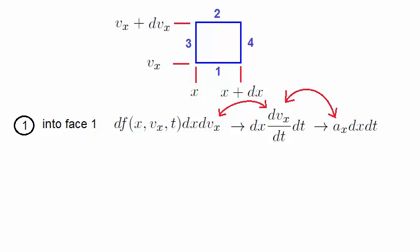In the same way, if we look at the number of particles coming out of face 2, it is given by a similar expression, except the velocity occurs at v plus dv. Again, we tidy the volume element dx dv in the same way.